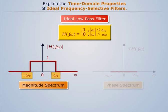all frequency components below cut-off frequency ωc are passed unchanged, whereas all the frequency components above cut-off frequency ωc are attenuated to zero value.